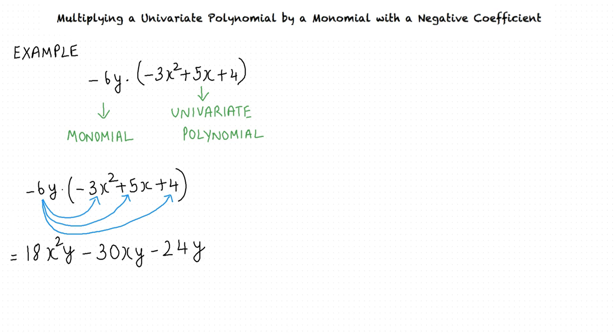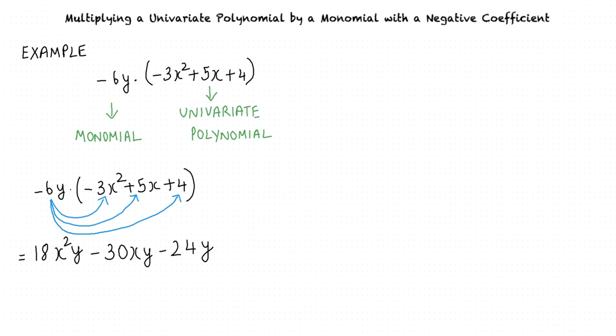Thus, negative 6y times negative 3x square plus 5x plus 4 is equal to 18x square y minus 30xy minus 24y. Can we do another example? Sure.